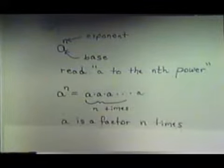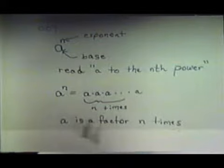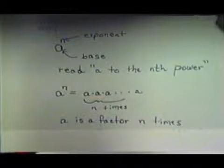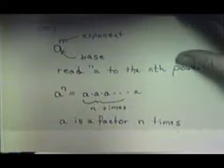The a is called our base. What a to the nth power means is that the a is multiplied by itself n times. Whatever the n is, that's how many times that the a is multiplied by itself, or the a is a factor n times.